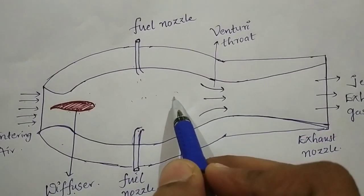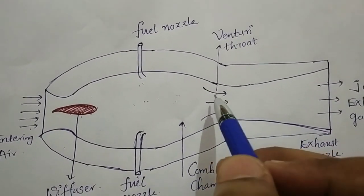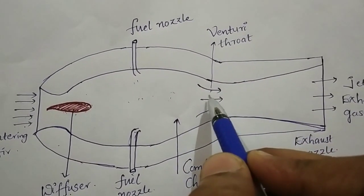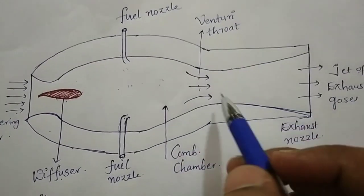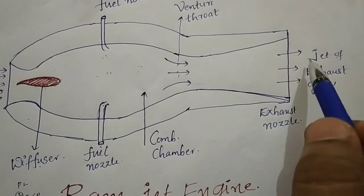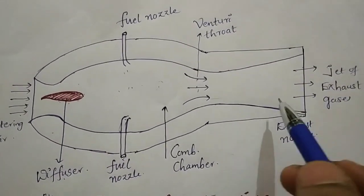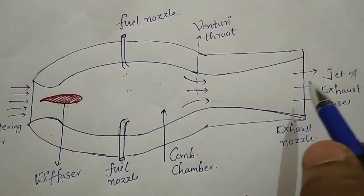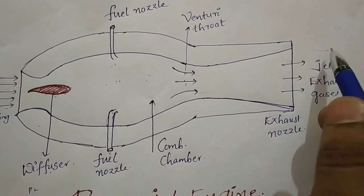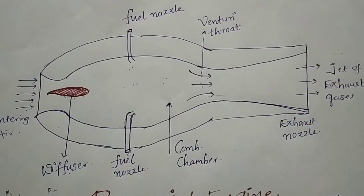Combustion takes place in the combustion chamber, releasing high temperature and high pressure gases. These gases are then sent through a venturi throat, which works like a nozzle — it increases the velocity and decreases the pressure. The high-speed jet of exhaust gases exits to the outside. When the jet moves in the backward direction, because of the reaction, the ramjet moves in the forward direction.